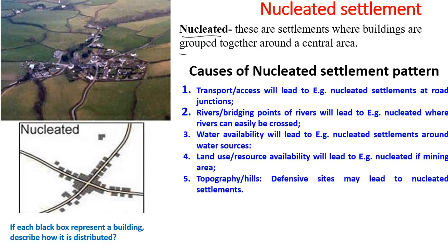Nucleated settlements have buildings grouped together around a central area, as shown in the diagram. A characteristic is that it's usually a road junction where all roads meet. Causes include transport access such as road junctions, river bridging points, water availability, land use, resource availability such as farming or mining, and topography — a hill defensive site may also lead to nucleated settlement.